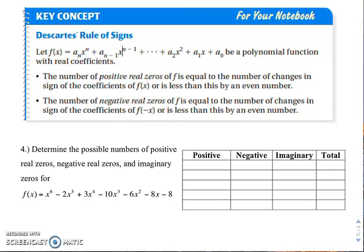Descartes' Rule of Signs is a rule that gives us the number of combinations for the possible zeros or solutions to a polynomial. So if we know that a polynomial has six solutions, it gives us the combination of positive, negative, or imaginary solutions that equal up to that total number of six. When we're doing this, we're going to find positive and negative real zeros, and then what's left will be imaginary. The number of positive real zeros is equal to the number of changes in the sign of the coefficients, or is less than this by an even number.